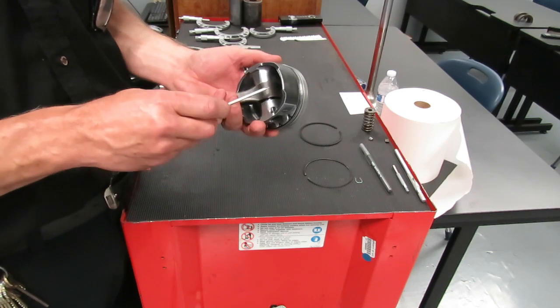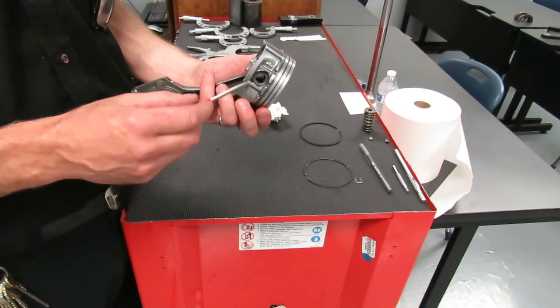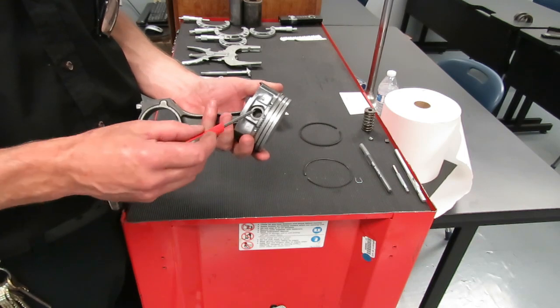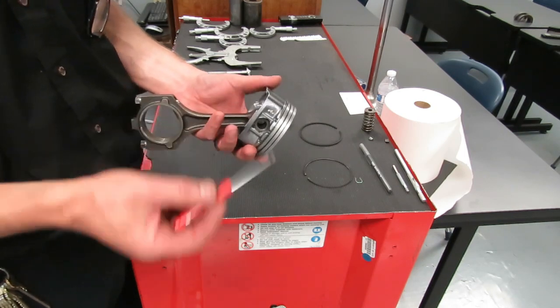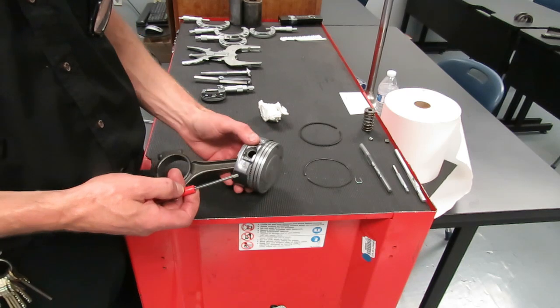There is a semi-floater where the pin is pressed into the rod, and then there's a full floater, which means the pin floats in the piston and the rod. That's what we have in our UTI training engine.